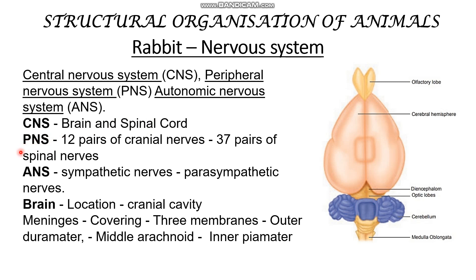Peripheral Nervous System — 'Periphery' means sides. The nerves that arise from the brain and spinal cord form the Peripheral Nervous System. It consists of 12 pairs of cranial nerves — cranial nerves are the nerves that arise from the brain — and 37 pairs of spinal nerves, which are the nerves that come from the spinal cord.